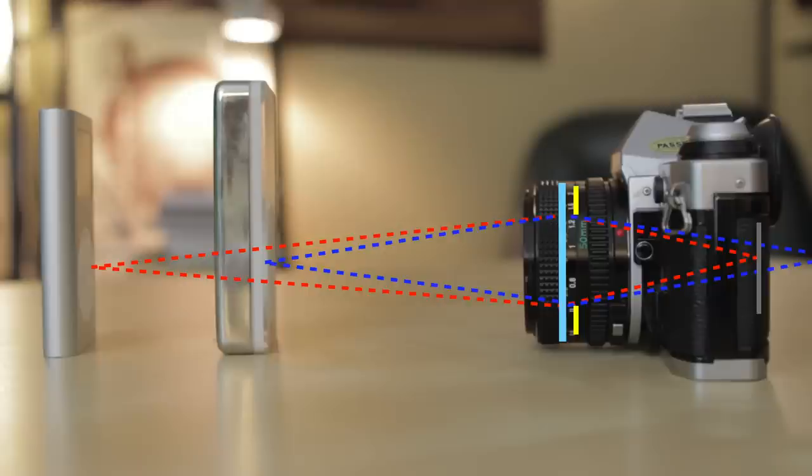So, the next iPod, the closer one, with its light represented by the blue dashed line, is taking the same path, however, notice the point of it, on the far end, meets past our sensor. Now, in this case, that close iPod would not be in focus, because it would only be in focus at that point, and since our sensor isn't there, it's going to be blurred.